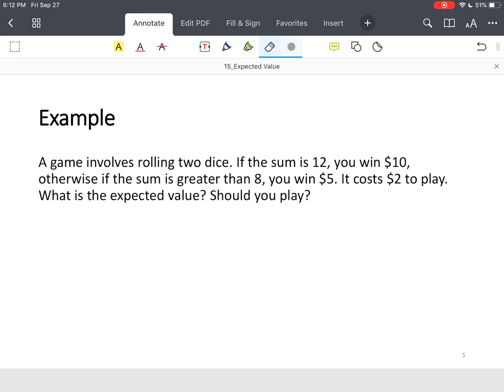Now we're going to look at a game involving the rolling of two dice. If the sum is 12, you win $10. Otherwise, if the sum is greater than 8, you win $5. But if the sum is less than 8, you don't win anything. So the cost of play is $2.